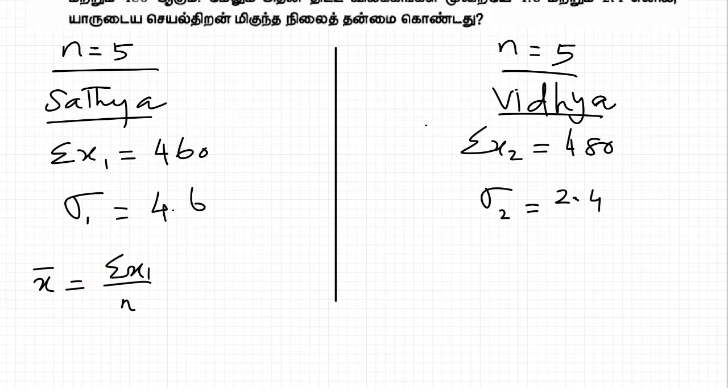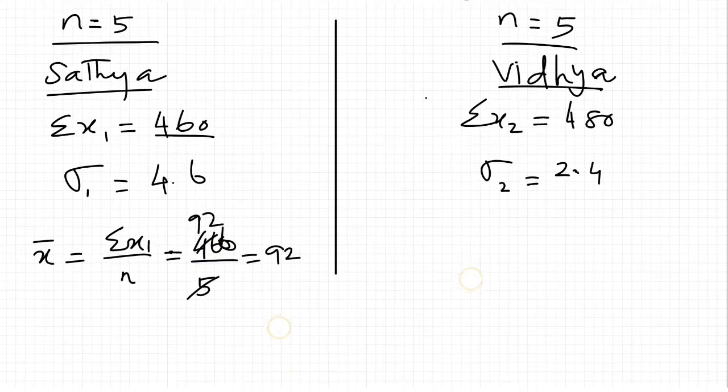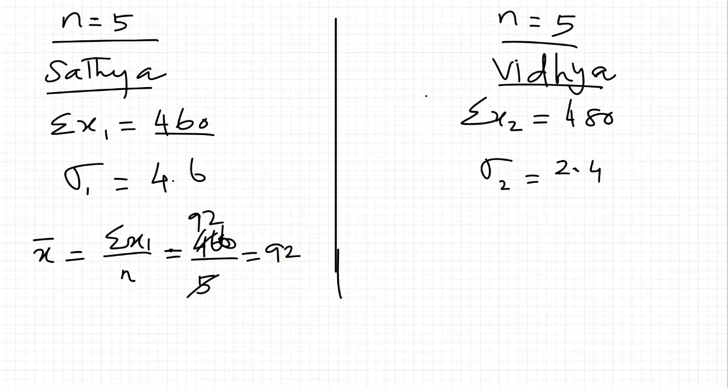This is sigma x1. The total is 460. Then x bar 1 equals 460 by 5, that's 92. The total of 480, so x bar 2 equals 480 by 5, that's 96.